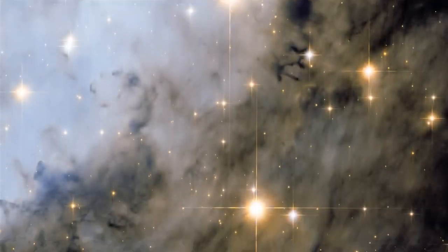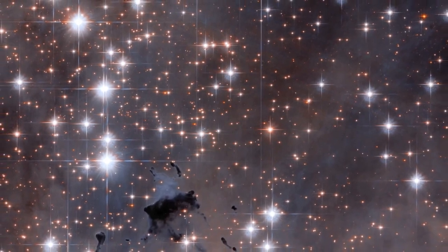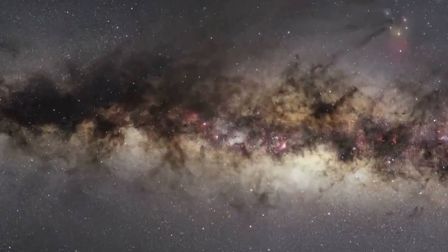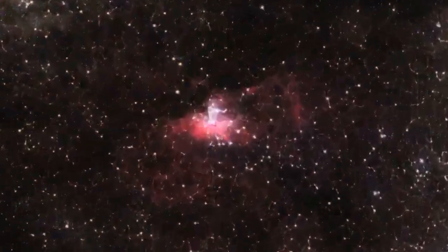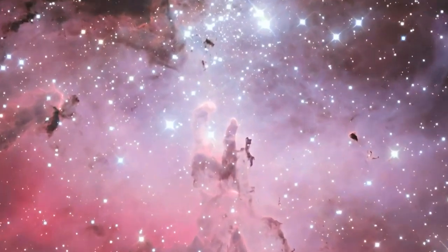Webb revealed two stars inside this nebula, where Hubble only saw one. This is the Southern Ring Nebula, where a dying star is slowly sending out layers of its atmosphere and waves, making colorful bubbles of gas that keep getting bigger.